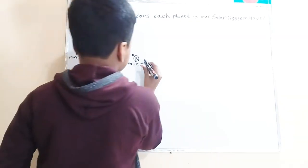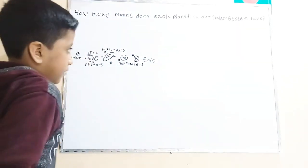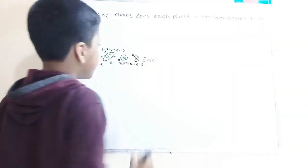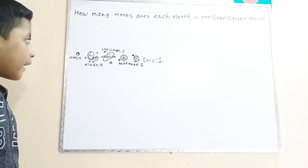Makemake has one moon, and the largest in mass, Eris, farthest from the sun, which has one moon which name is Dysnomia. So one.